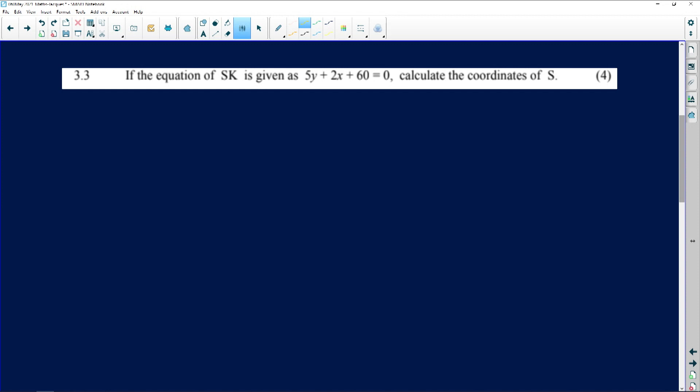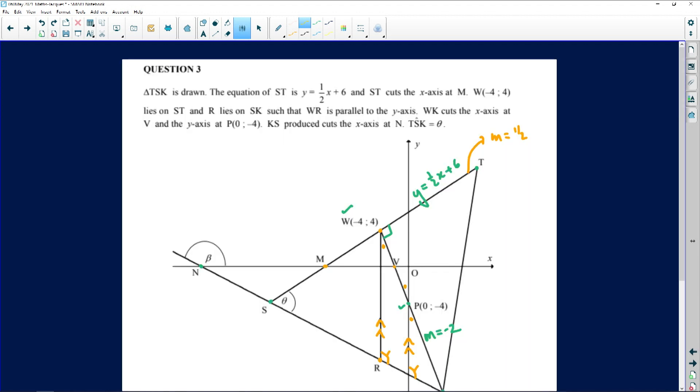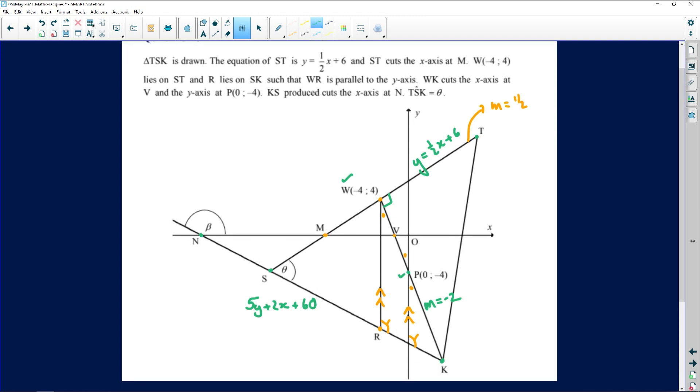The next one looks interesting. They now give us an equation of SK as 5y plus 2x plus 60. Let's go and put that up there: 5y plus 2x plus 60 equals 0, that is the equation of SK. Remember K is the point here at the bottom, so that's the equation of this line from S to K. Immediately if we wish to we can write it in the form mx plus c: so minus 2 over 5x, so the gradient is minus 2 fifths, plus 60 divided by 5 is 12. So we have the gradient in case we need it.